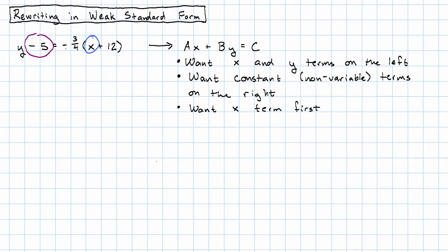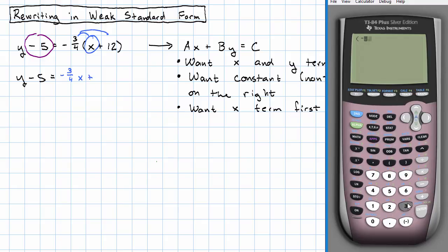To do that, well first I need to distribute. y minus 5 will just stay, and I'll have negative three-fourths x plus negative three-fourths times 12 is negative 9.